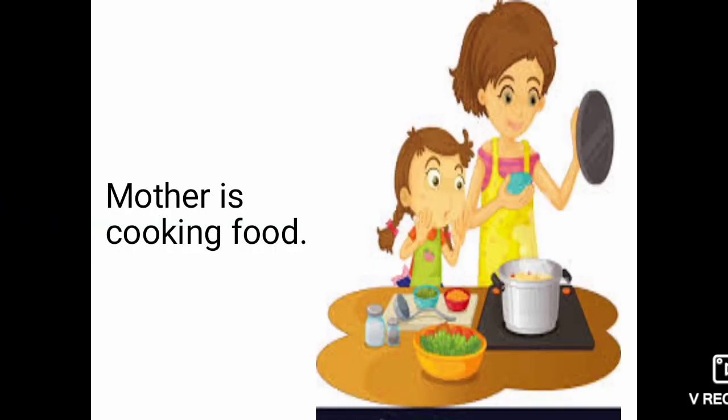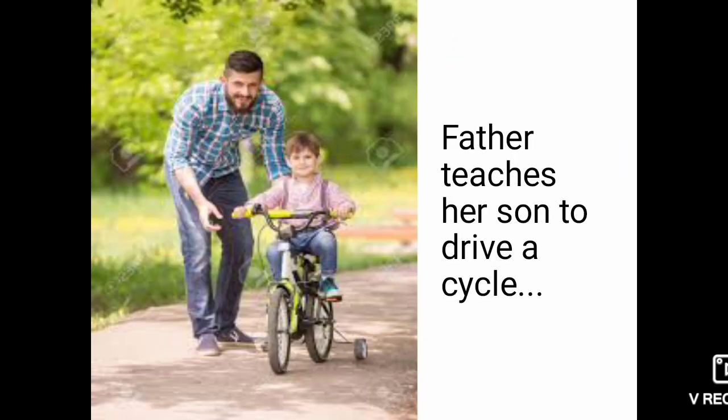In this picture you can see a mother is cooking food, so the word 'cooking' shows what the mother is actually doing. In another picture, father teaches his son to drive a cycle. Here you can see two types of actions: firstly, father is teaching his son, and another is the son driving a cycle — two activities happening simultaneously.